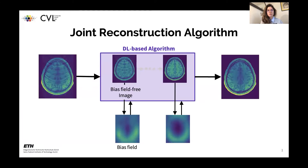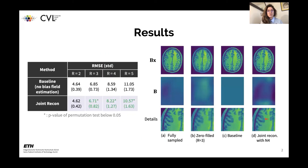We proposed a joint reconstruction scheme where we used a deep learning-based algorithm incorporating iterative estimations of the bias field, such that the estimates of the bias field and the bias field-free image could improve simultaneously. Our results showed that estimating the bias field during reconstruction made the model less sensitive to domain shift, giving better RMSE results for different undersampling ratios, and also visually more faithful reconstructions compared to the fully sampled image.